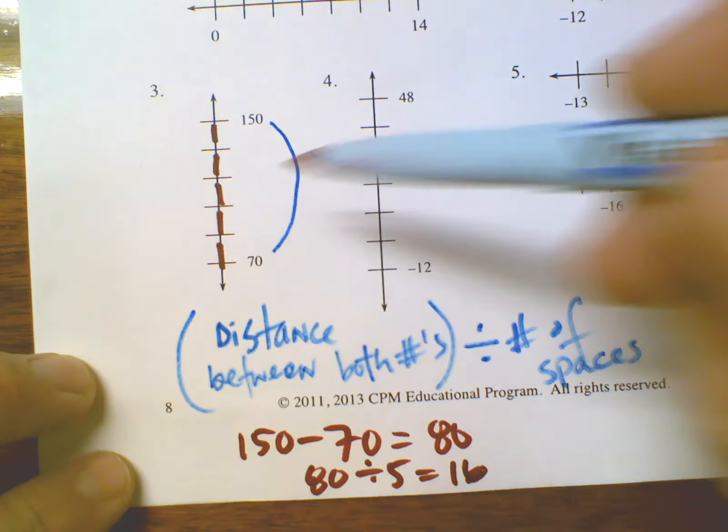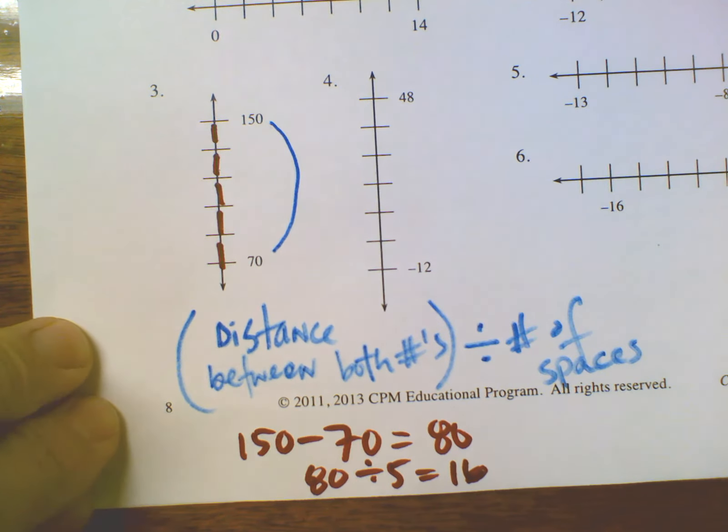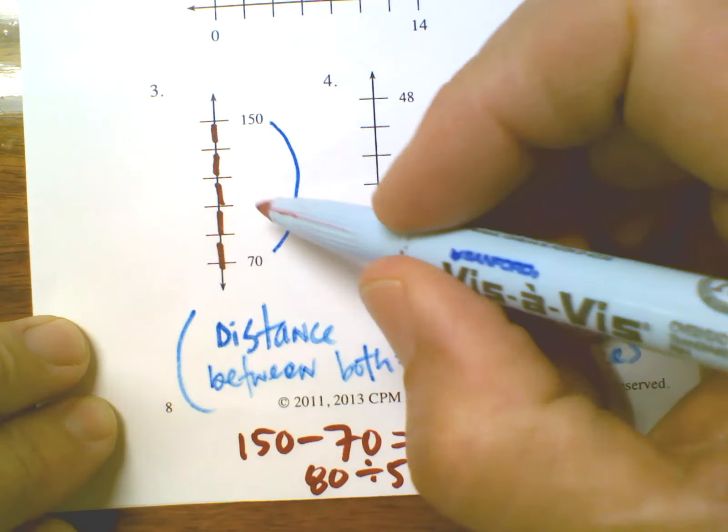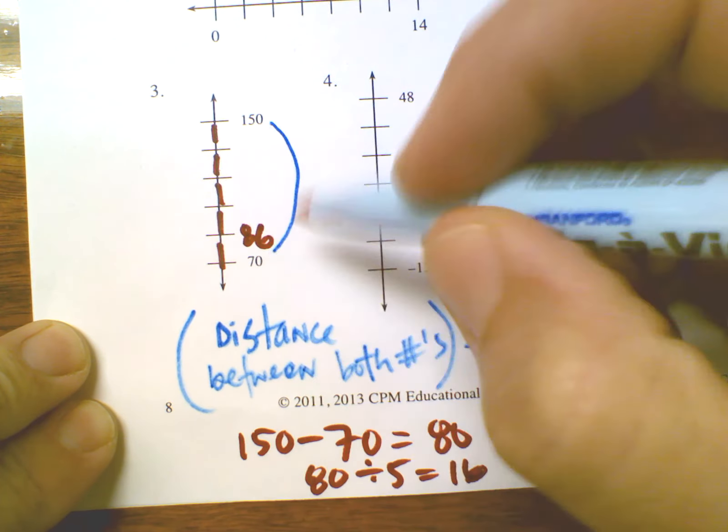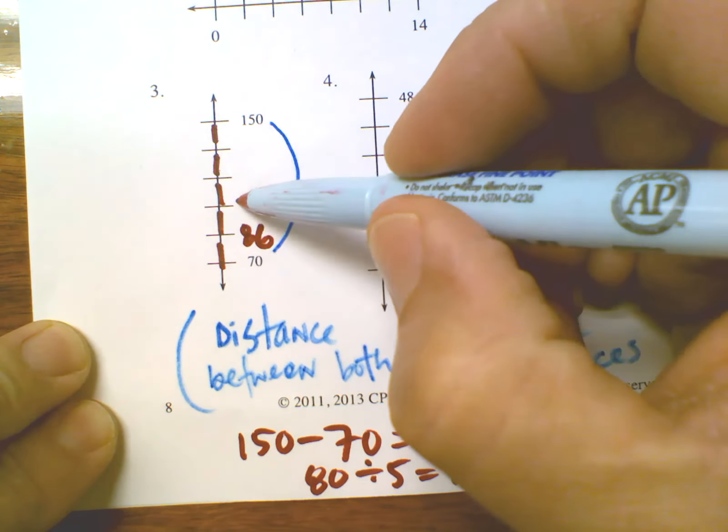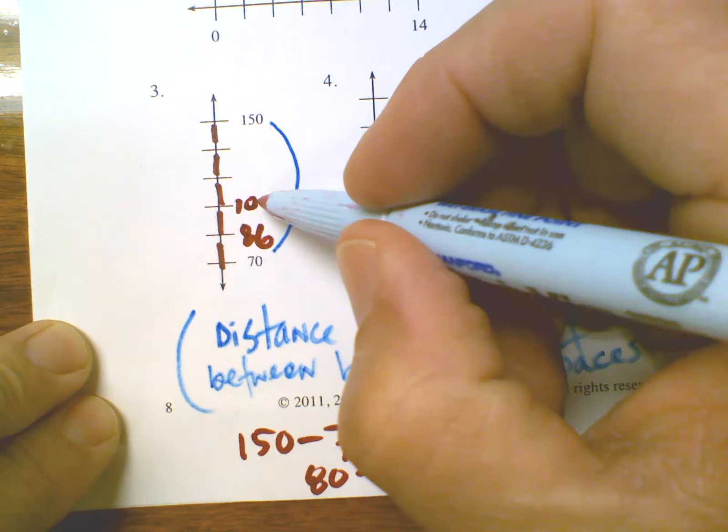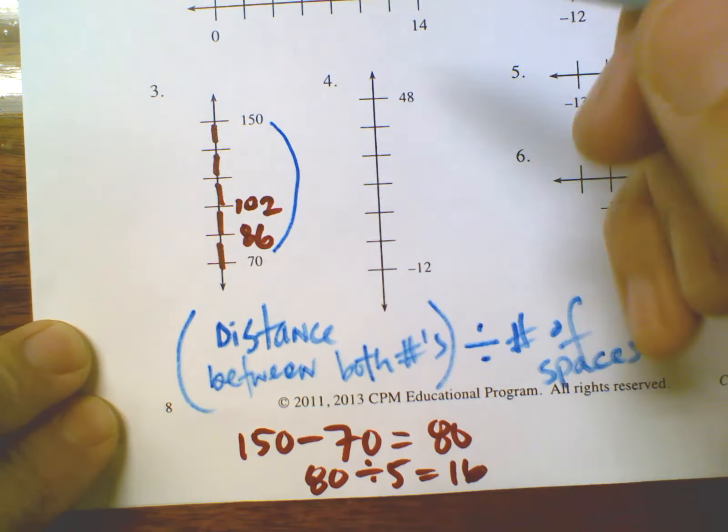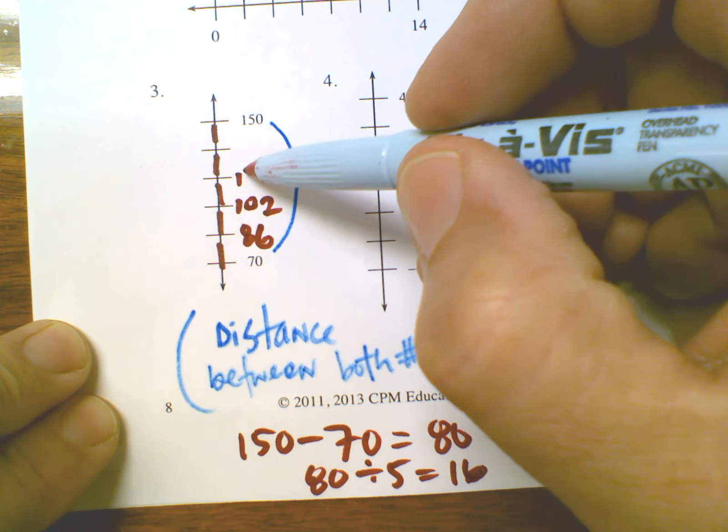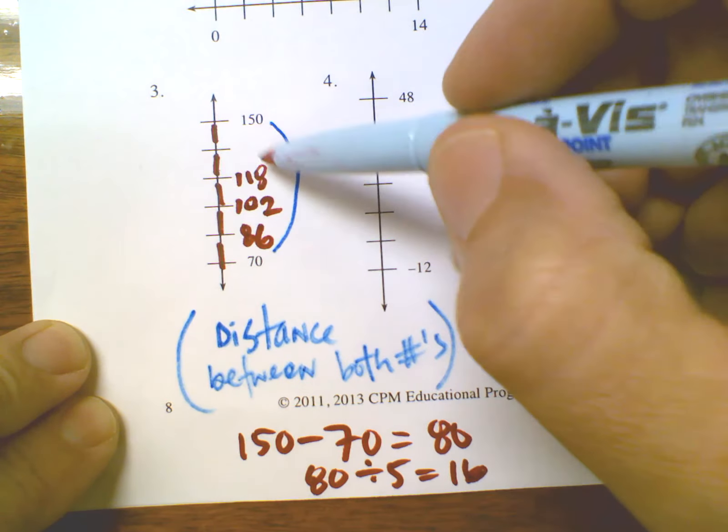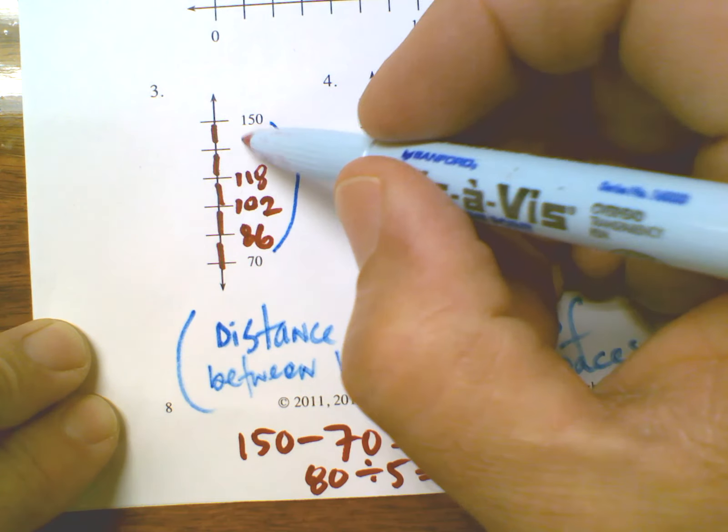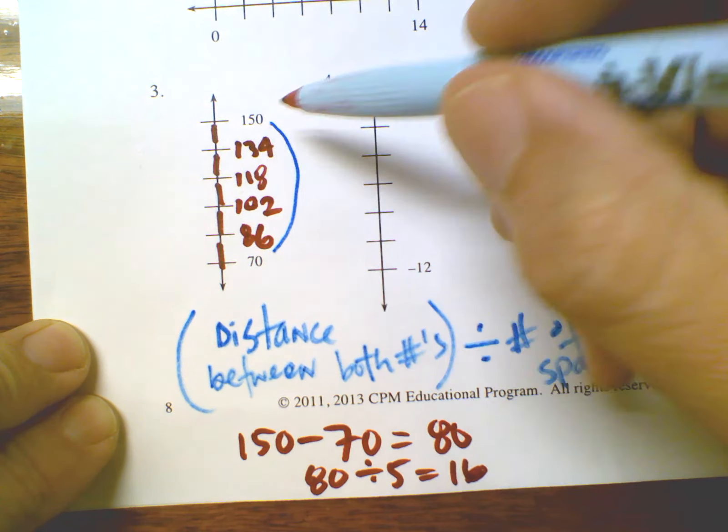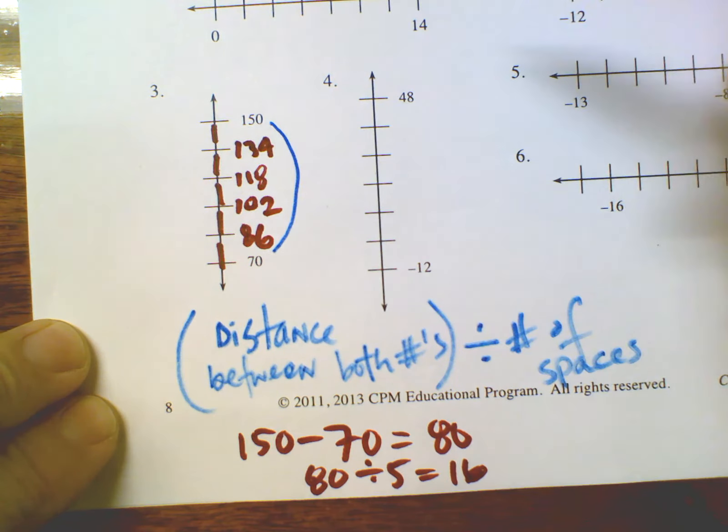Let's test it. We would go 70 plus 16 is 86, plus another 16 is 102, plus another 16 is 118, plus another 16 is 134, and then plus another 16 takes me to 150. So there's our increments for number three.